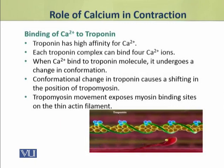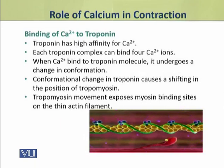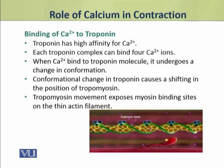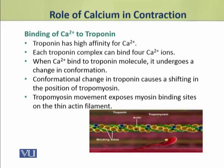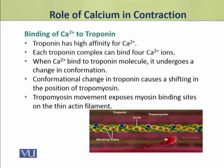Troponin has high affinity for calcium ions. Each troponin-tropomyosin complex can bind 4 calcium ions. When these calcium ions bind to the troponin molecule, as a result, troponin undergoes a change in its conformation.